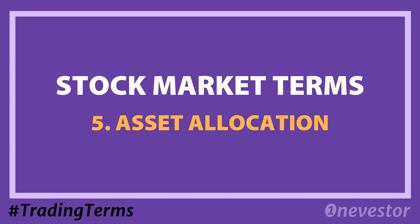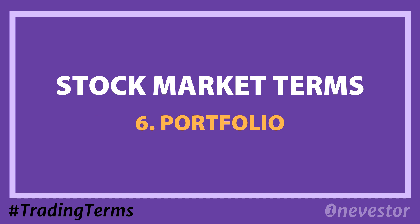The next term is asset allocation. When you invest in different asset classes, your capital is distributed — for example across stocks, cash, and other instruments. Asset allocation is how you design your investment portfolio — deciding how much to invest in stocks, how much in bonds, and how much to keep in cash or other assets.